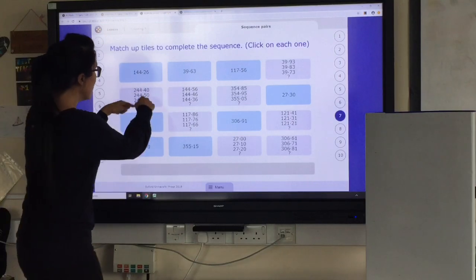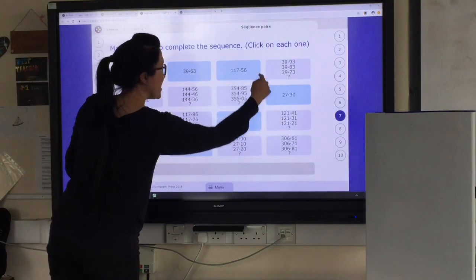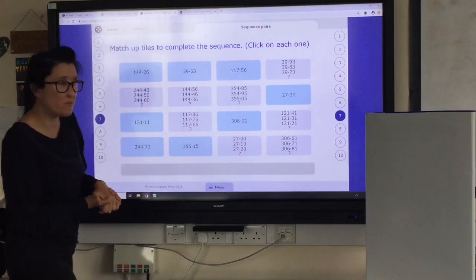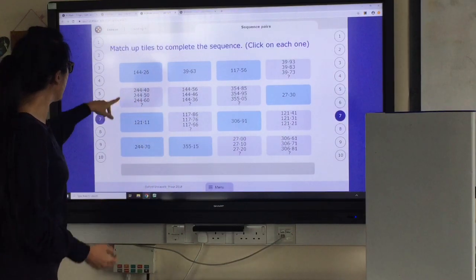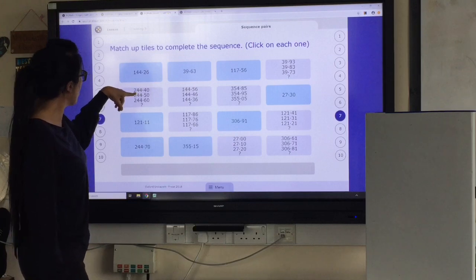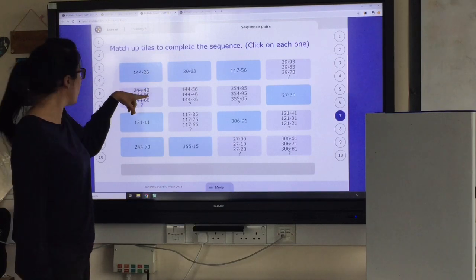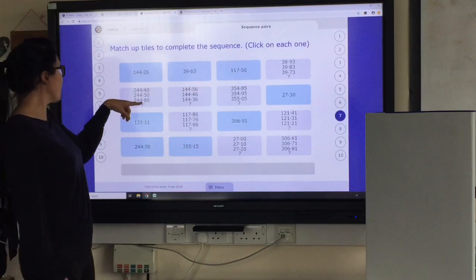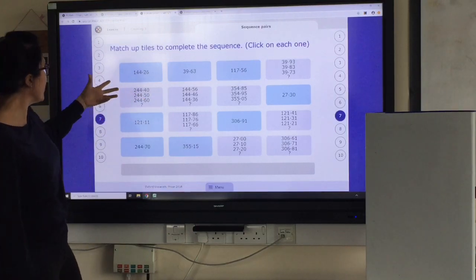So these are the sequences with multiple numbers in, in the pale colours. And these are the answers of what replace the question marks. So if we look at this one, for example, I've got 244.40, 244.50, 244.60. What's going to be next?